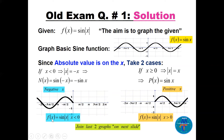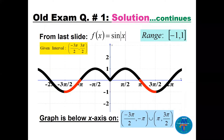We join the two parts — positive x and negative x — to get the final graph of sine|x|. The range is [−1, 1]. The graph is below the x-axis in the interval from −3π/2 to −π, union from π to 3π/2 — that's the red part only.